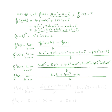Now, like usual, on the next step we always factor out the h so we can cancel it with the h in the denominator. So f prime of x equals the limit as h approaches zero of h times eight x plus four h plus one, all over h.